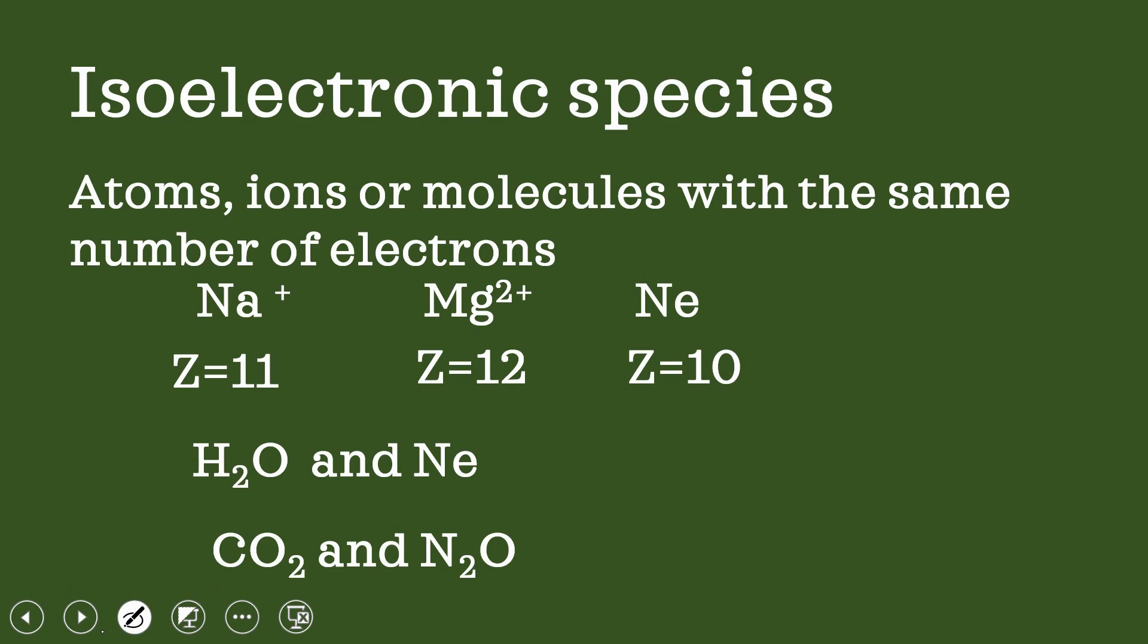Next set is carbon dioxide and nitrous oxide. In carbon dioxide, atomic number of carbon is 6, so it has 6 electrons plus oxygen, atomic number is 8. One atom will contain 8 electrons, two atoms will contain 16 electrons, and totally you will have 22 electrons in it.